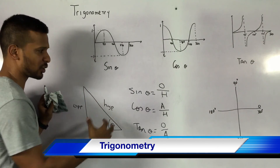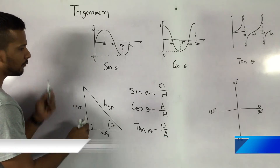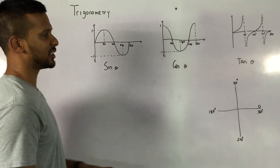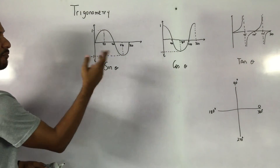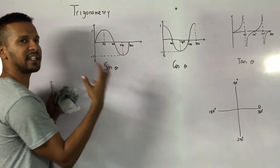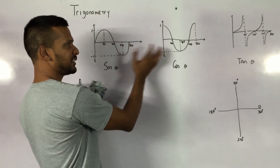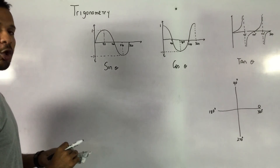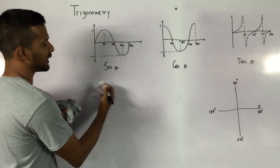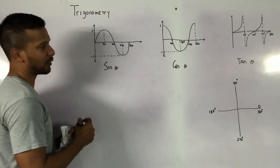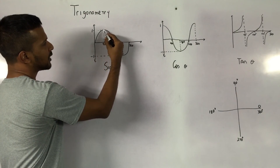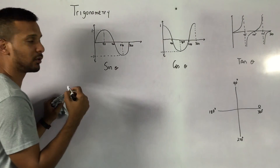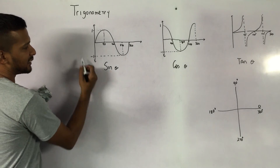If you look here, you will see the three representations: graphs for sine, cosine, and tan. Sine has a very familiar sinusoidal shape, cos a very similar shape, and tan is a little bit different. So we're going to spend a little bit of time looking at these functions. Sine starts at zero, goes to a maximum value, comes back to zero, goes to a minimum value, and then back to zero.